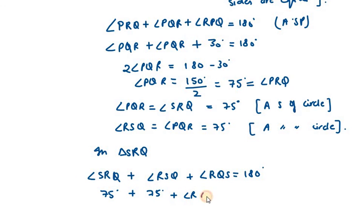Now we want to find angle RQS. So 150 degrees on the left-hand side, and when we move it to the right-hand side it will be in minus. 180 minus 150 gives you 30 degrees.